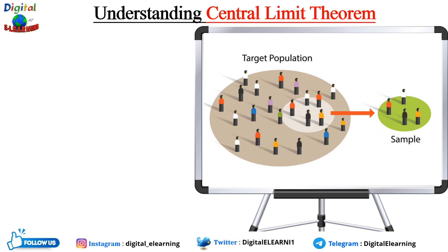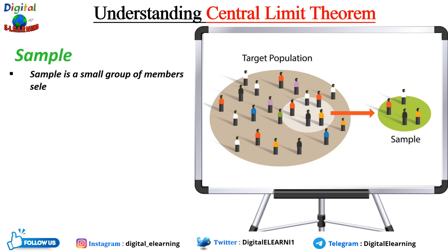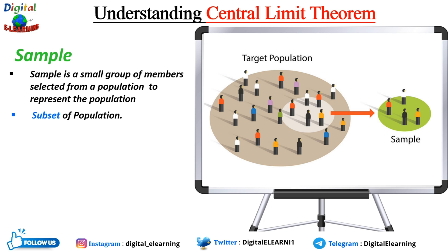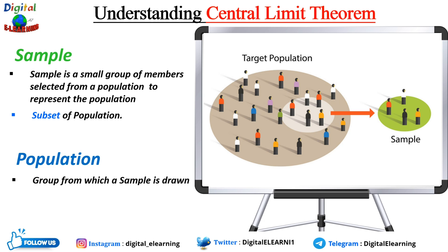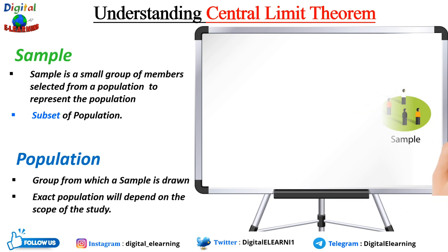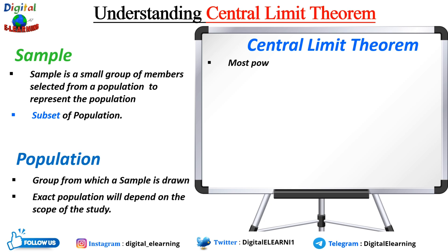To understand the concept of central limit theorem, let us first understand two terms: population and sample. A sample is a small group of members selected from a population to represent it — basically a subset of a population. A population, on the other hand, is the group from which the sample is drawn, and the exact population depends on the scope of the study.